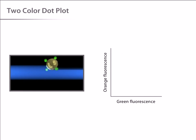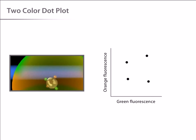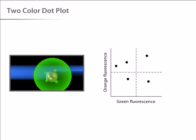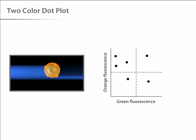If we analyze data from the two-color experiment using a scatter plot, four distinct populations emerge. Looking at the dot plot in terms of quadrants, cells with only bright orange fluorescence appear in the upper left quadrant. Cells with only green fluorescence appear in the lower right quadrant. Cells with both bright green and bright orange fluorescence appear in the upper right quadrant. And finally, cells with both low green and low orange fluorescence appear in the lower left quadrant.